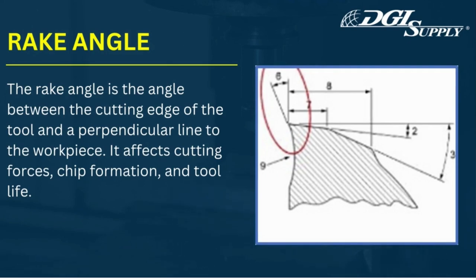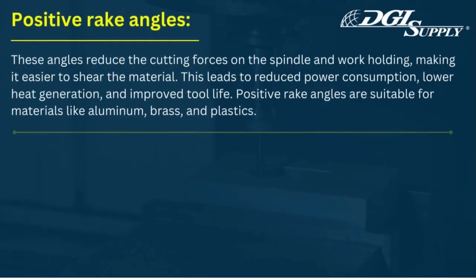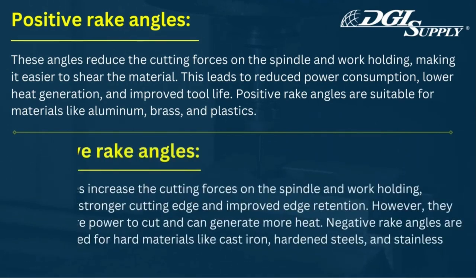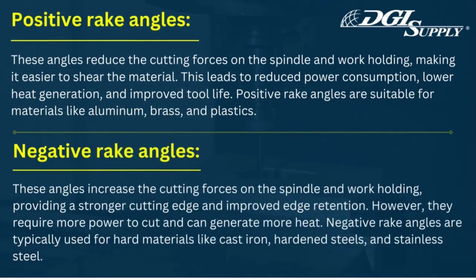Positive rake angles. These angles reduce the cutting forces on the spindle and work holding, making it easier to shear the material. This leads to reduced power consumption, lower heat generation, and improved tool life. Positive rake angles are suitable for materials like aluminum, brass, and plastics.